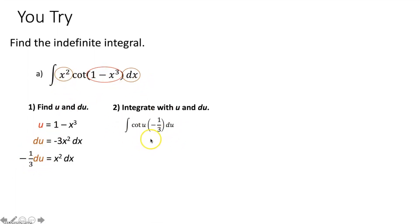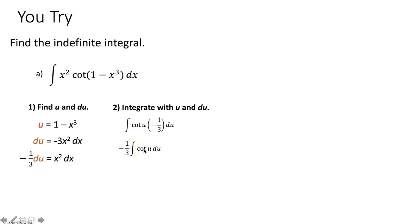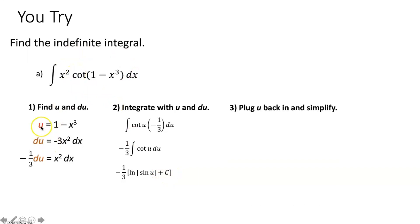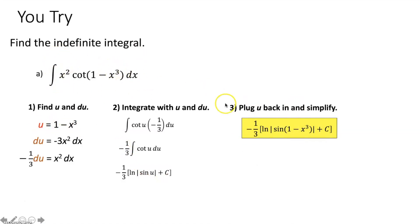Now evaluate the integral: move the negative one-third constant out front. Then integrate cotangent of u du — which we have memorized as natural log of |sin u| plus c. Finally, substitute 1 minus x³ back in for u. We have evaluated the indefinite integral of x² cotangent(1 − x³) dx.